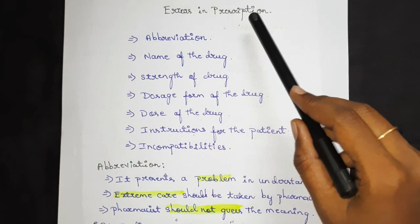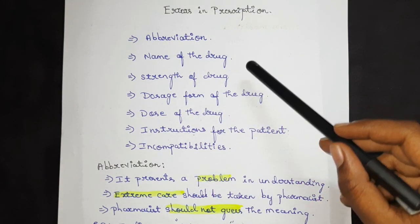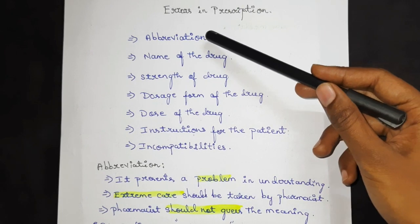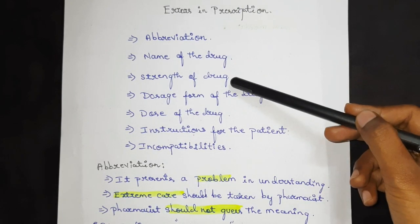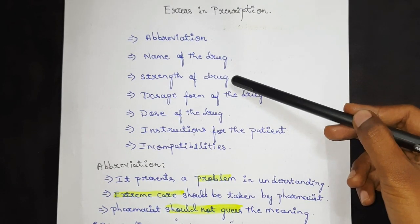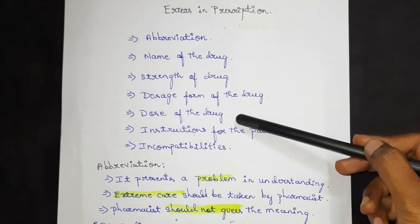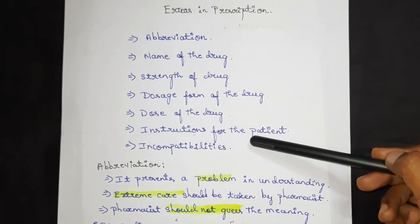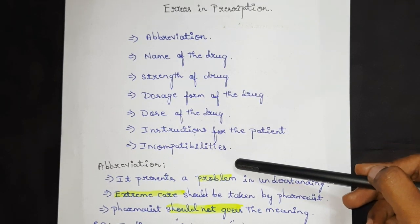Errors in Prescription. There are 7 main errors in the prescription: Abbreviation, name of the drug, strength of the drug, dosage form of the drug, dose of the drug, instruction for the patient, and incompatibilities.